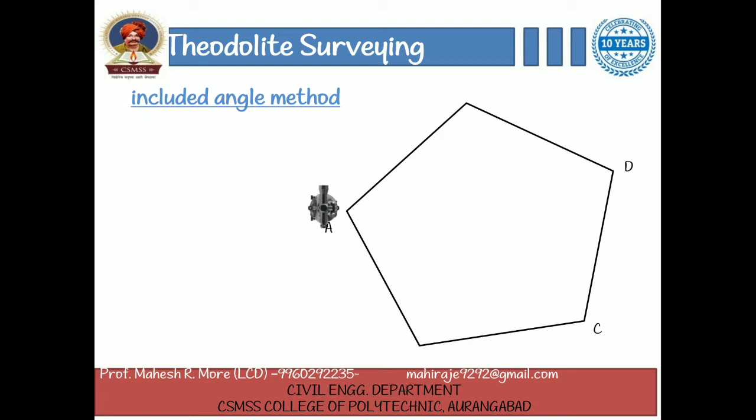The theodolite is set up and centered at A. The plate bubble is leveled. Vernier A is set at zero degree and vernier B at 180 degrees. The upper clamp is fixed. The telescope is oriented along the north line with the help of tubular compass fitted to the instrument.